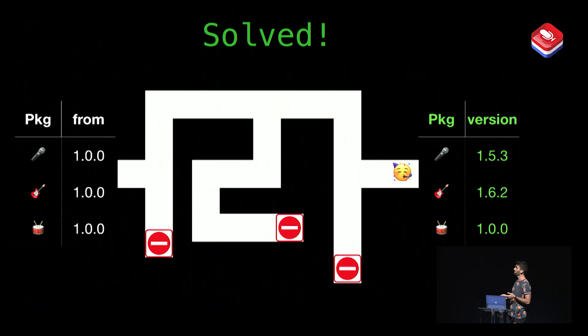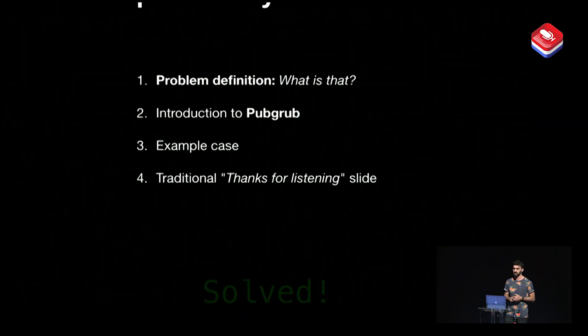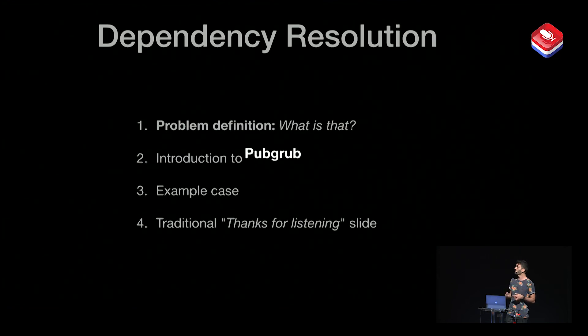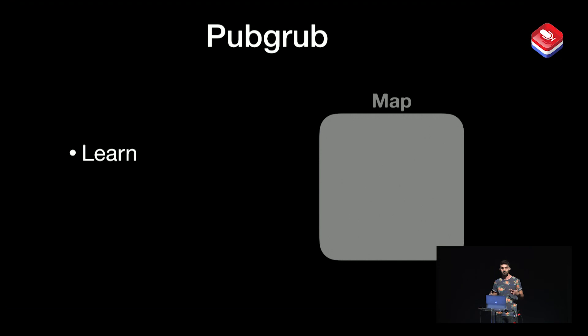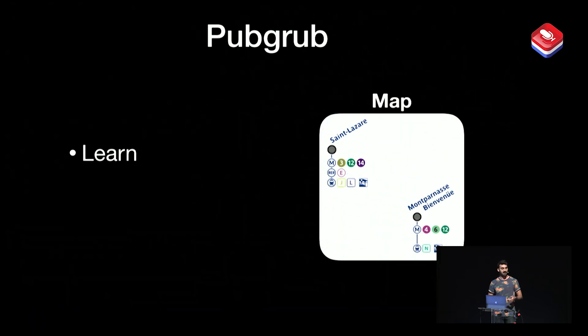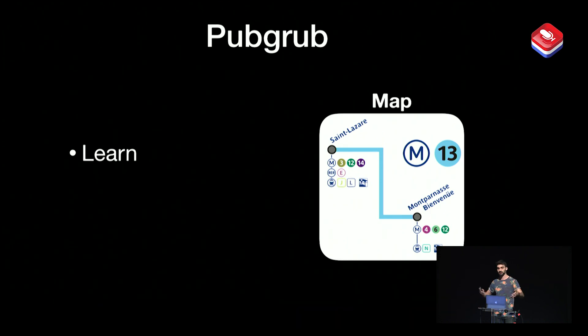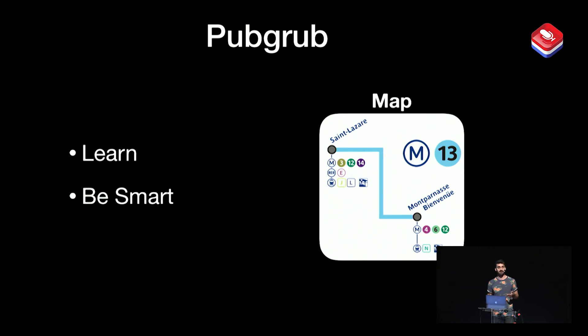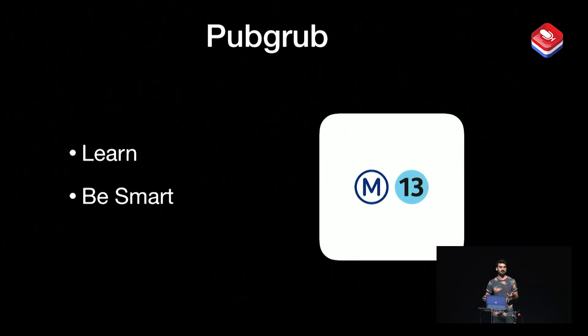We can solve this problem by trying every possible combination blindly. But can we do better? That's how PubGrub improves the solution. At a very high level, PubGrub does two main things. First, it learns — it learns about the maze as it advances, learning the facts, remembering the causes and actions, basically creating a map of the maze. So when it hits a dead end, it instantly knows where to go back to take a different path. And it's also smart — smart enough to take lessons from mistakes, so it doesn't repeat the same mistake again and again.